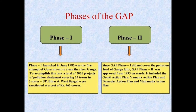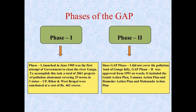Various actions taken by the Government of India include the Ganga Action Plan and Yamuna Action Plan. The Ganga Action Plan Phase 1 was launched in June 1985; a total of 2,061 projects of pollution abatement covering 25 towns in three states — UP, Bihar, and West Bengal — were sanctioned at a cost of rupees 462 crores. The river Ganga is polluted due to industrial waste through UP and domestic waste through West Bengal. Since Phase 1 did not fully cover the pollution load, Ganga Action Plan Phase 2 was approved from 1993 onwards, including the Gomti, Yamuna, Mahananda Action Plans.